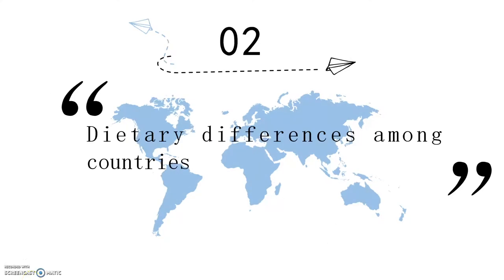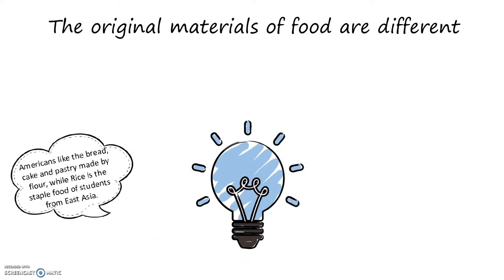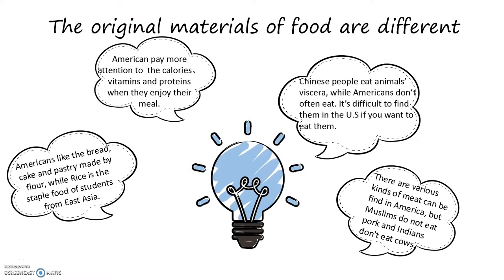Let me talk about some dietary differences among countries. The first is that the original materials of foods are different. Americans like to eat bread, cake, and pastry made from flour, but Chinese people like to eat rice as their main food. Americans pay more attention to nutrition, while Chinese may pay more attention to taste. Chinese people eat animal organs, while Americans do not — it is difficult to find them in the US.